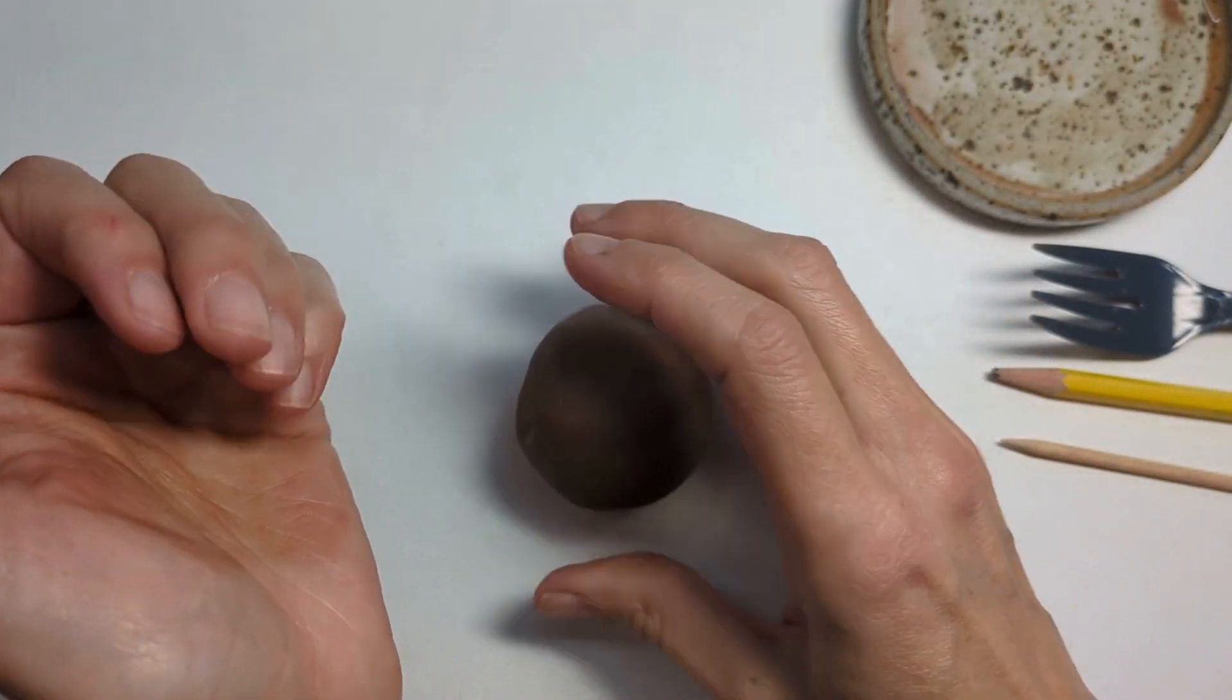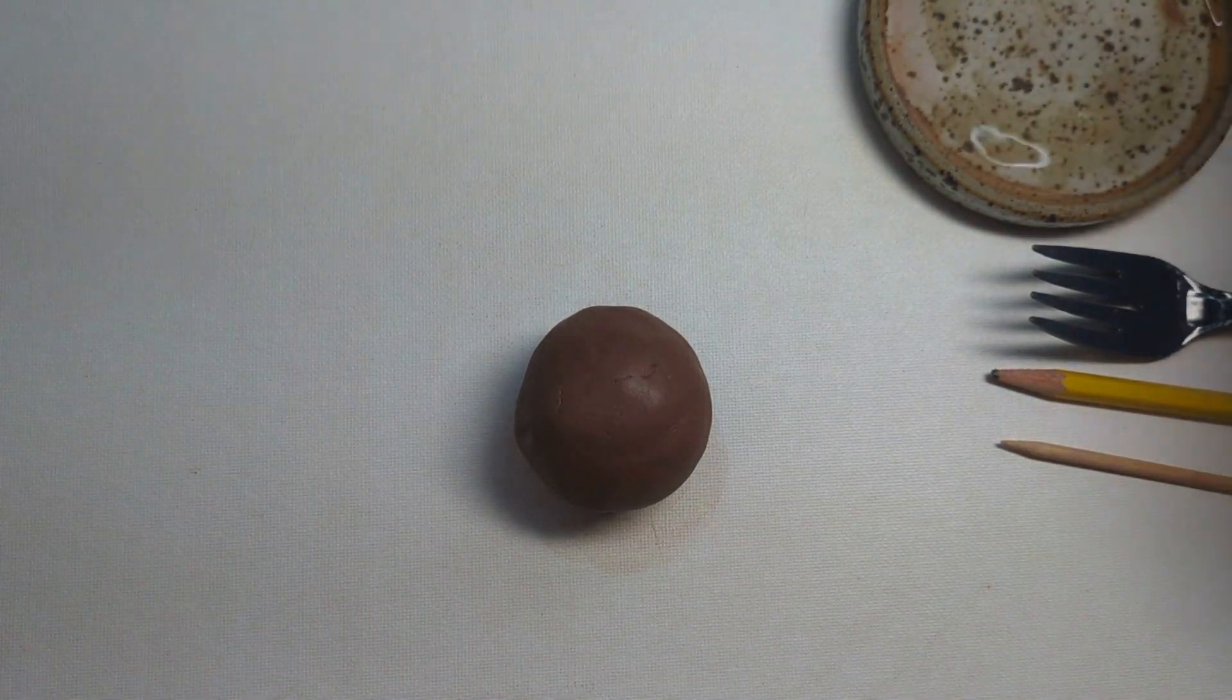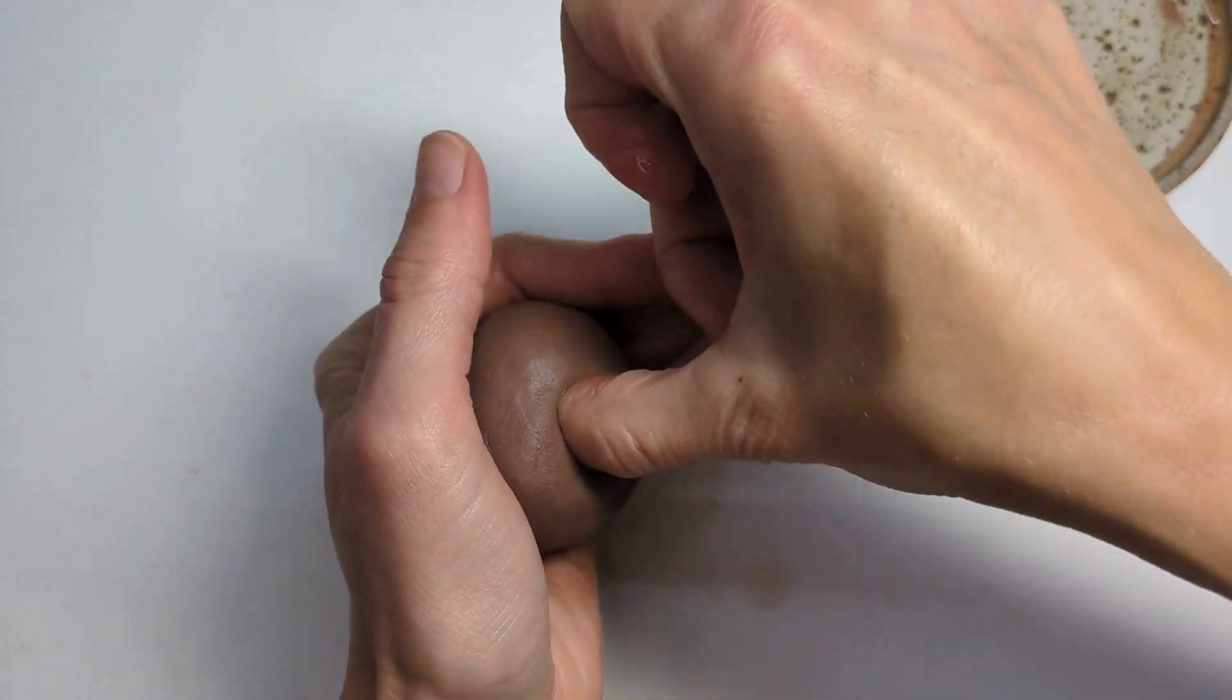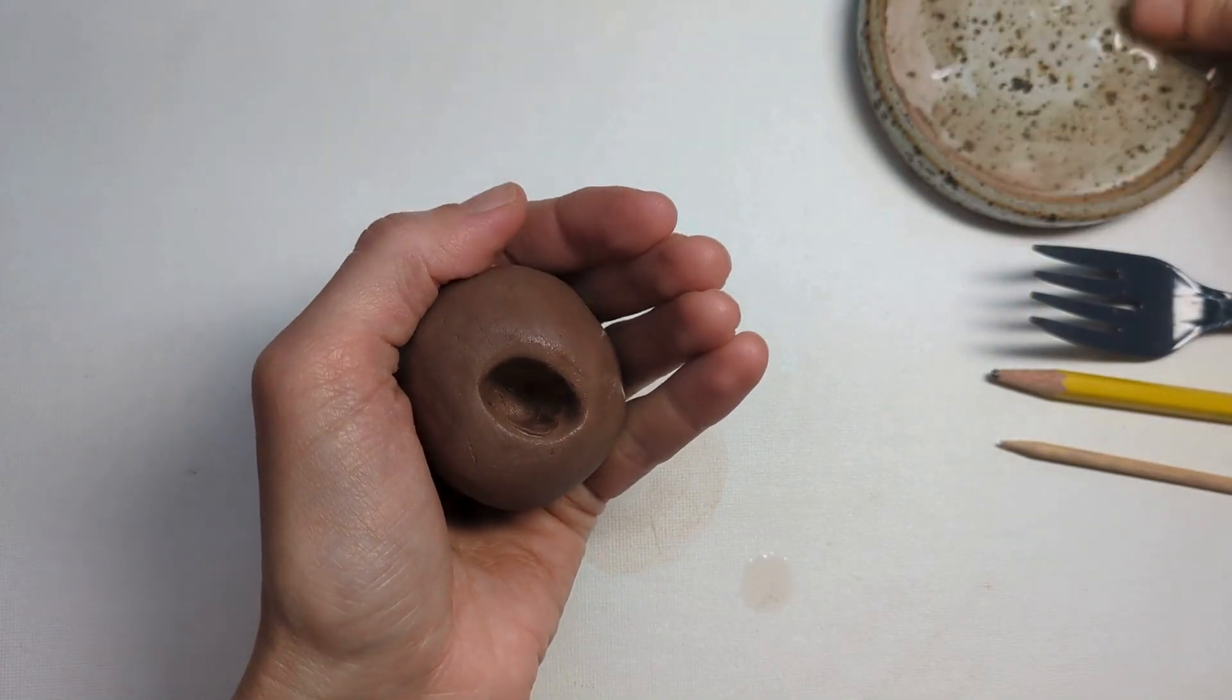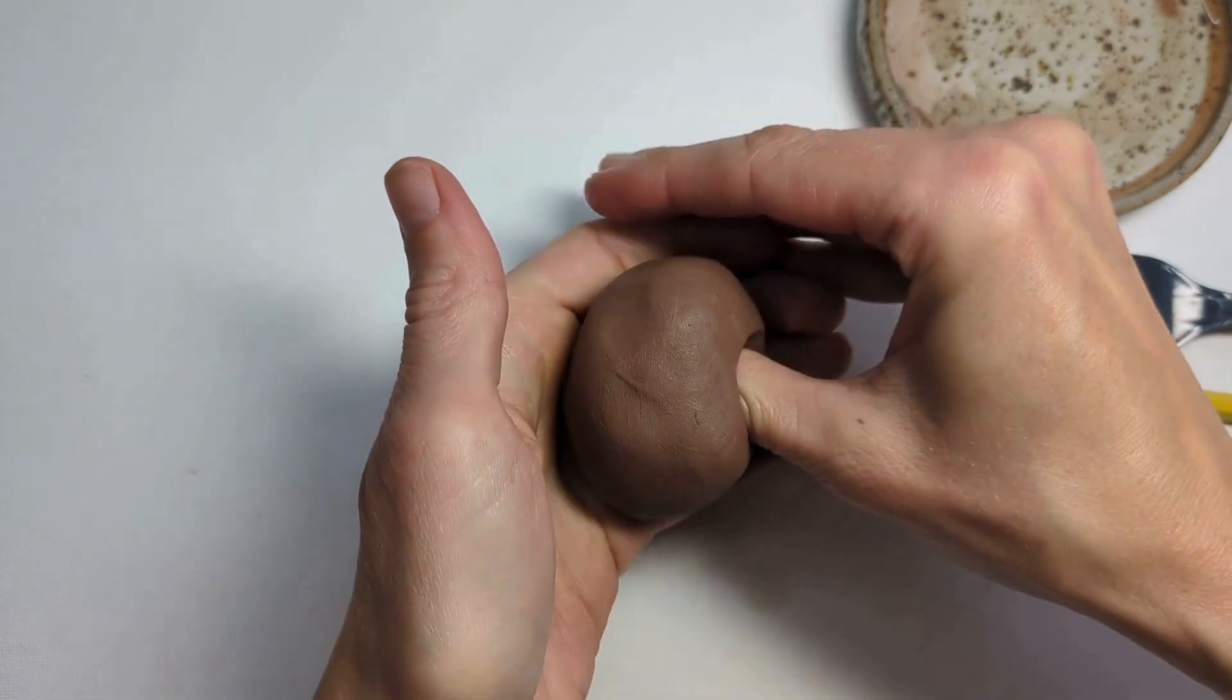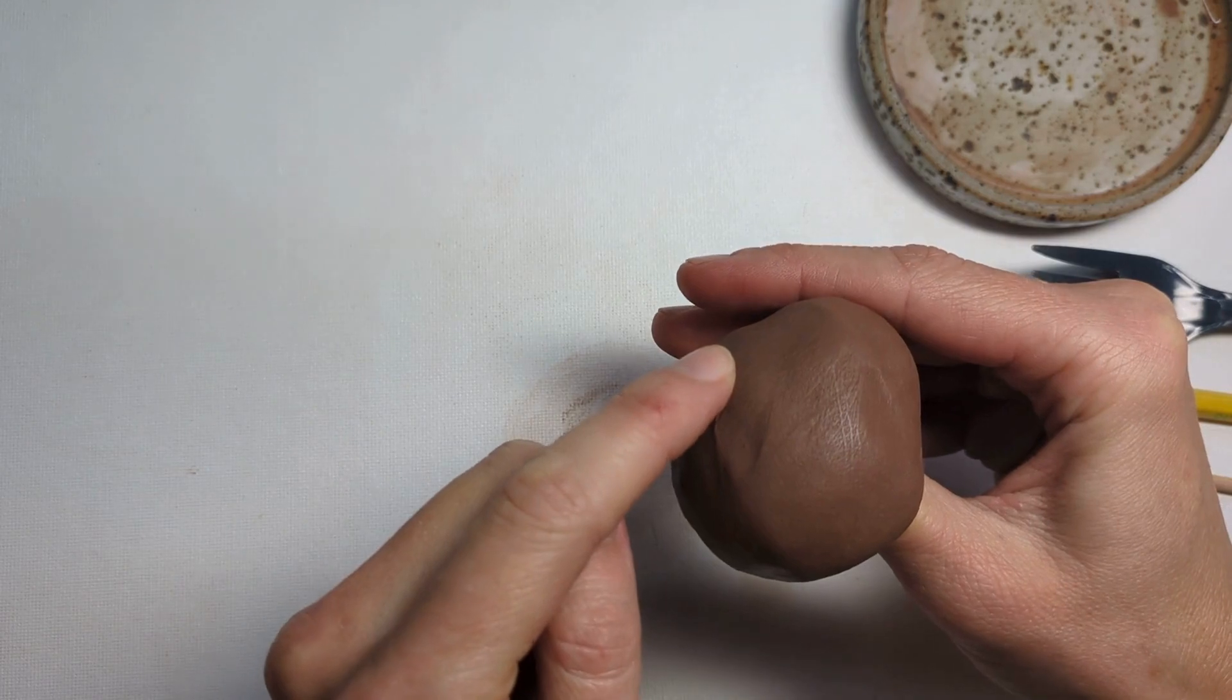After I have rolled it into a nice round ball, I am going to get my thumb wet in the little bit of water. I'm going to stick my thumb into the middle of the clay and pull it out. I'm going to get my thumb wet again, stick it back in the same hole, and push my thumb in a little bit farther so I can feel it pressing on the end of the clay but I don't want it to poke out all the way.